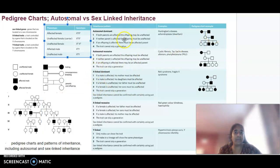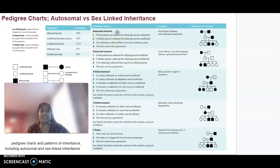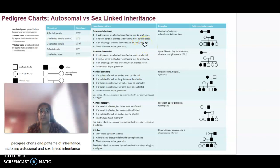For determining inheritance patterns, there are key features to look for. For autosomal dominant: if both parents are affected, offspring may be unaffected; if neither parent is affected, offspring are also not affected; if an offspring is affected, they must have at least one affected parent; and the trait cannot skip a generation. Examples include Huntington's disease and achondroplasia (dwarfism).